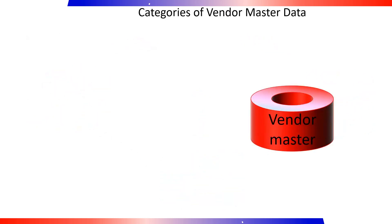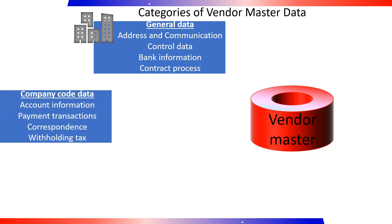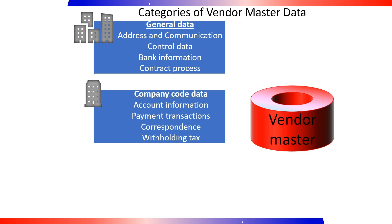Categories of Vendor Master Data: General Data is valid for a single client level and includes the vendor's address, control data, bank details, communication, and contact persons. Company Code Data is maintained at the company code level and includes the number of the reconciliation account, correspondence, withholding tax, and the payment methods for automatic payment transactions.